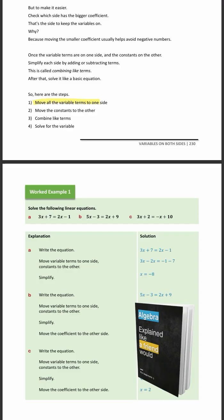The first step is to move all the variables to one side. The second step is to move the constants to the other side. The third step is to combine like terms and then finally solve for the variable.